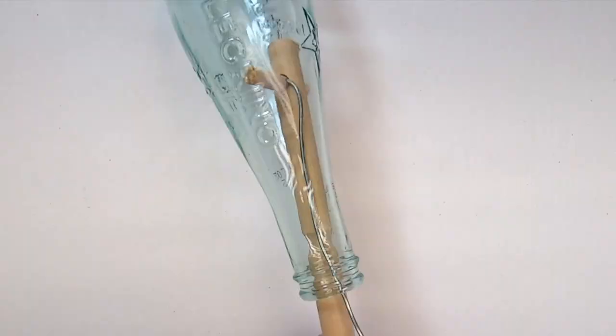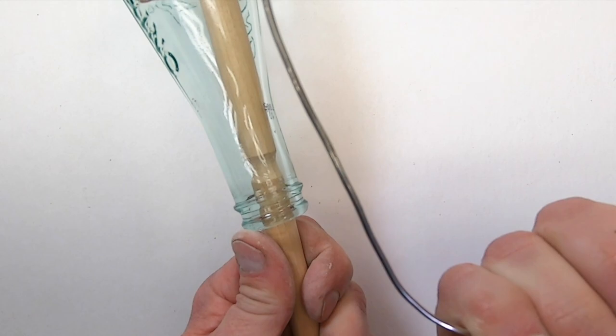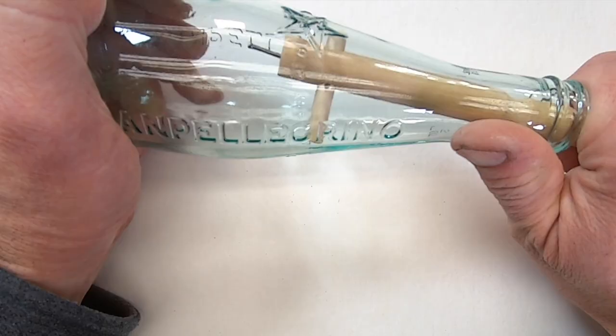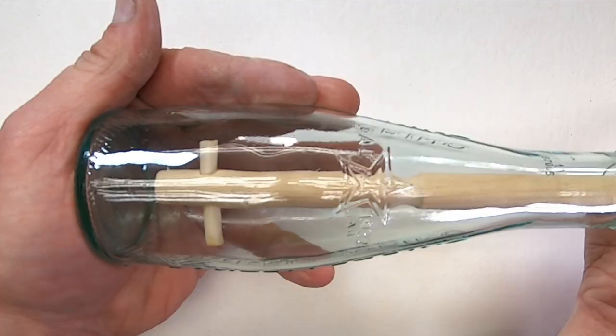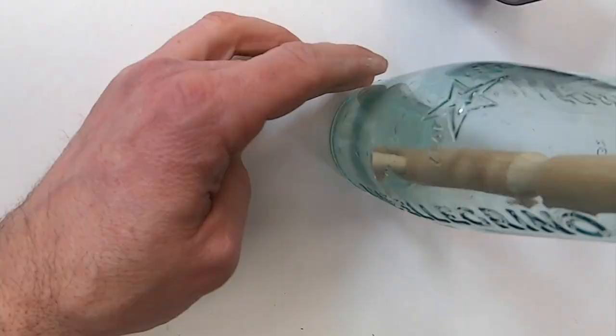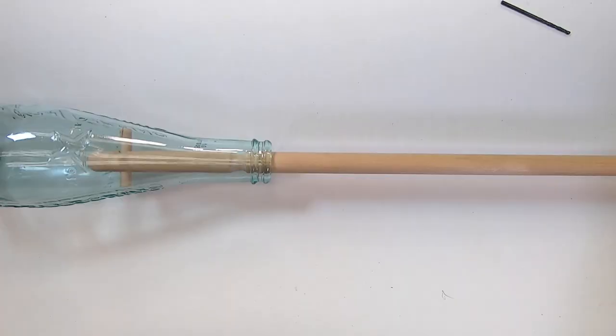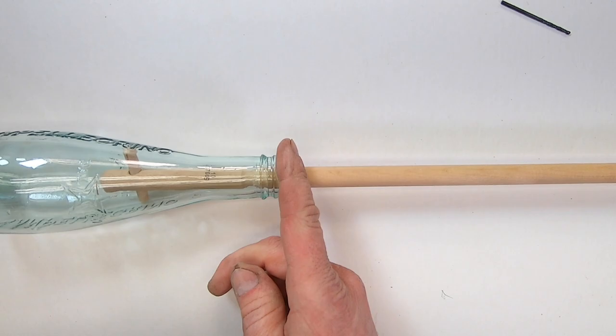The length of this long dowel rod will give me leverage. Now I can give the wire a tug to remove it. Once the two dowels are lined up, I can press the nail against the bottom of the bottle. This should slip in fairly easily with the pilot hole that I made.